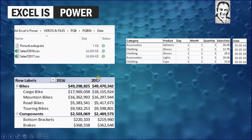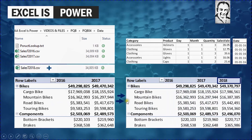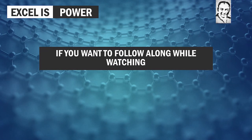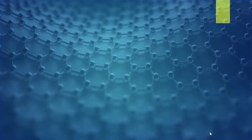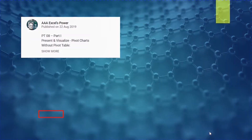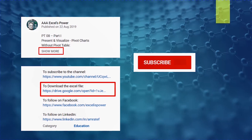The pivot table report will contain data for both years. Not only that — when we add a new file to the folder containing sales for 2018 and refresh the query, the pivot table report will be updated with the new year's information. If you want to follow along or practice after watching, go to the description section to find the download link, and use the subscribe button and bell icon to get notified of new videos.